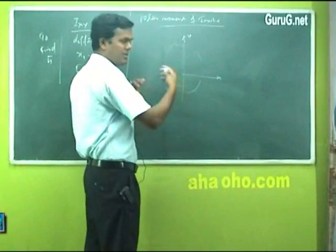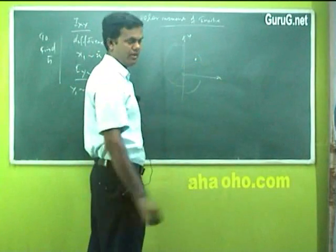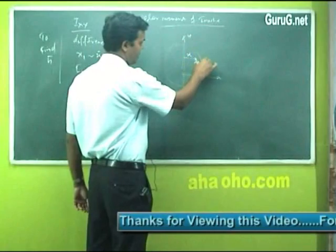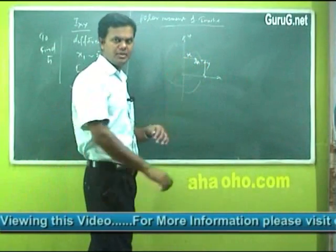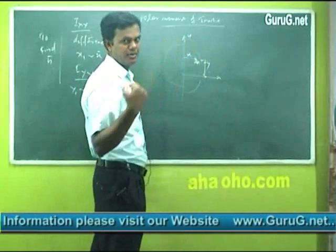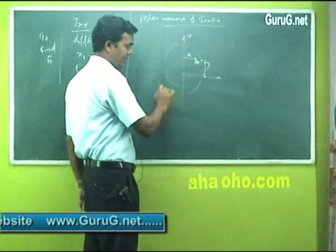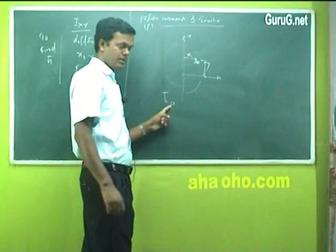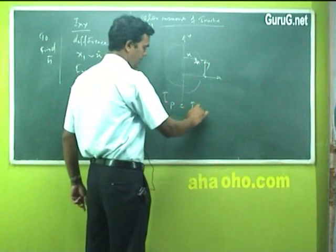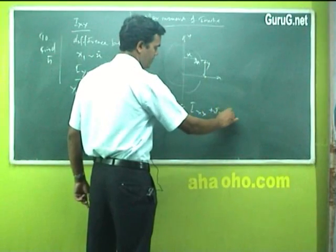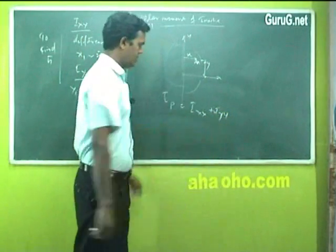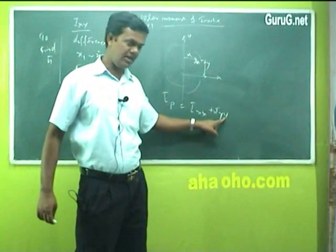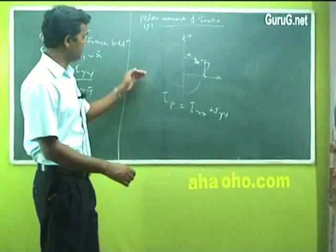Suppose I have a body with a small elemental area dA, with a distance x here and y here in that plane. My axis is perpendicular to it. Mathematically, polar moment of inertia Ip is equal to Ixx plus Iyy. The polar moment of inertia is the addition of moment of inertia about the xx reference axis plus moment of inertia about the yy reference axis.